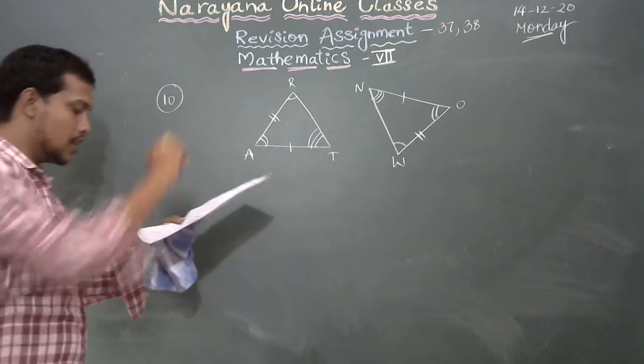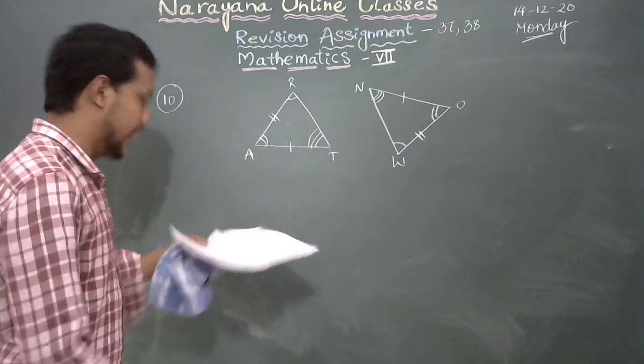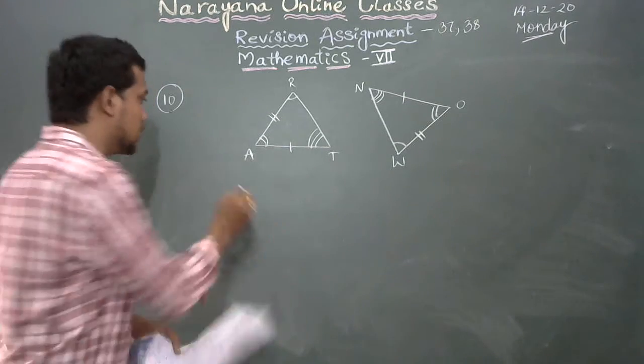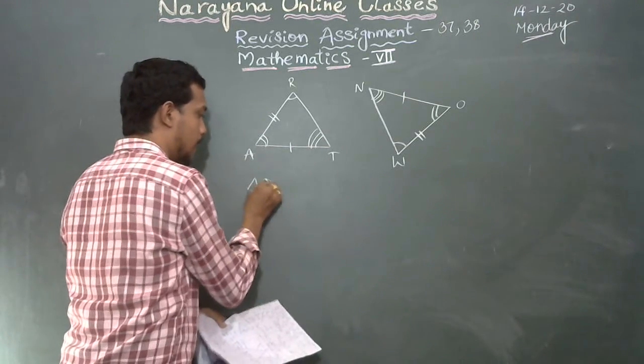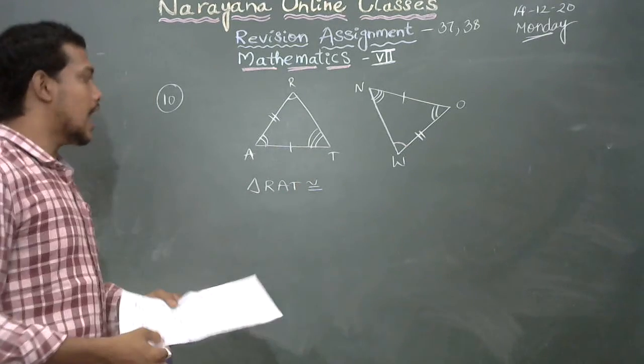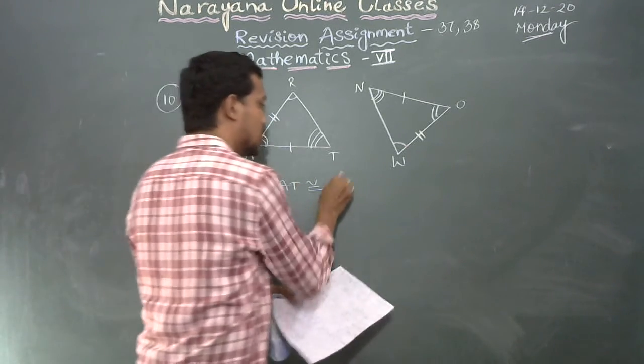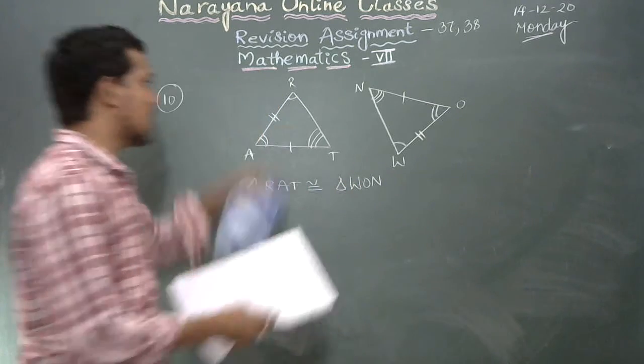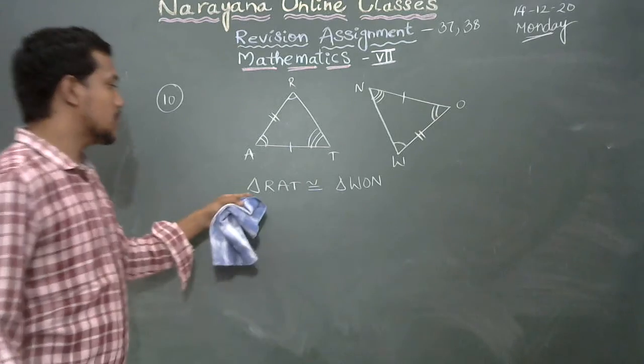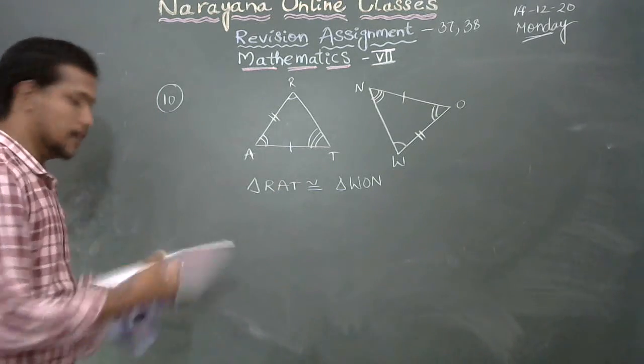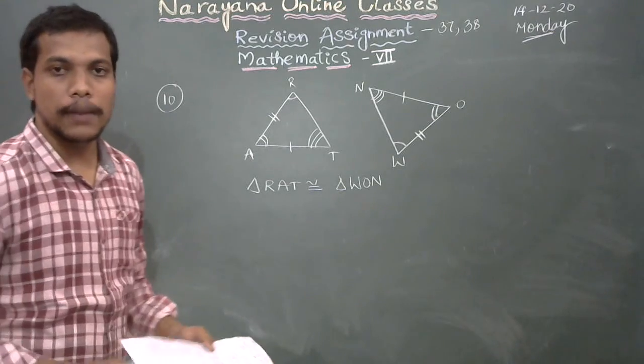In figure two triangles are congruent, the corresponding parts marked we can write: triangle RIT is congruent to triangle WON. This triangle is congruent to this triangle. Triangle RIT is congruent to triangle WON. Here's the assignment completed.